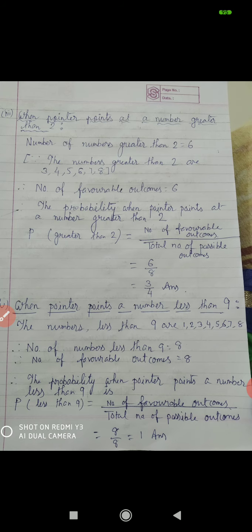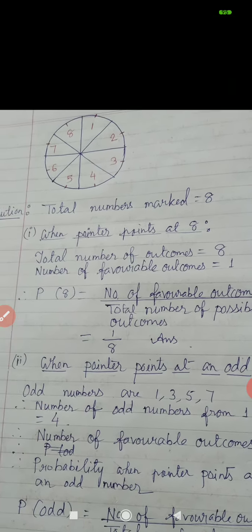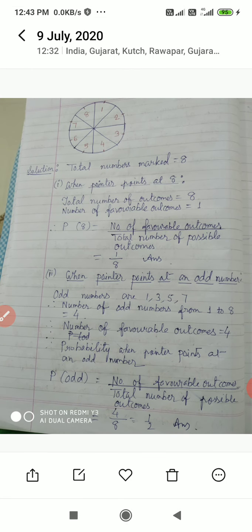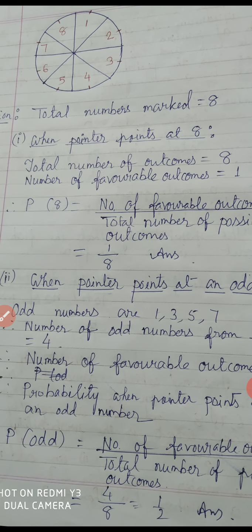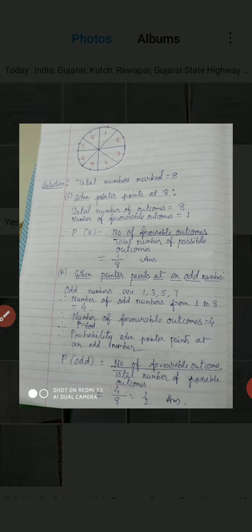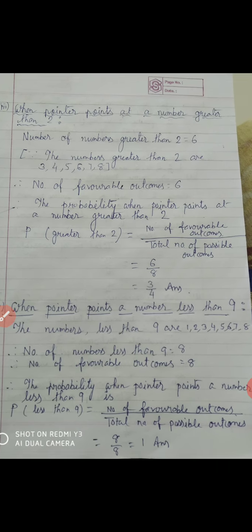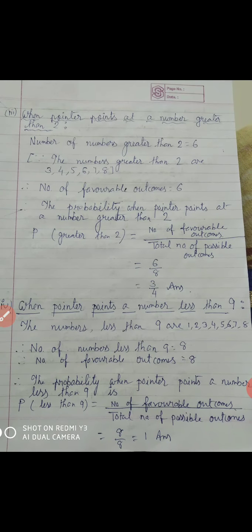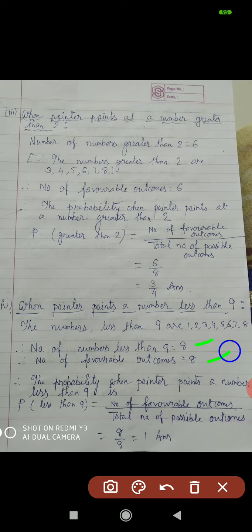Students, look at the spin — all numbers here, 1, 2, 3, 4, 5, 6, 7, 8, are less than 9. So the number of less-than-9 numbers equals 8, and total outcome equals 8. Therefore the probability when pointer points at a number less than 9 equals 8 by 8, which equals 1.